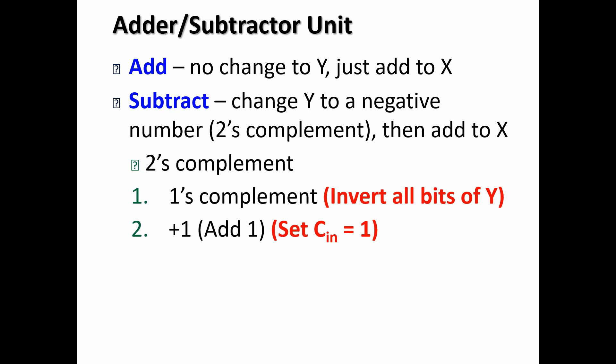When we are going to subtract, we need to change Y into a negative number. And how do we do that? That means we need to do a 2's complement of it. Now, a 2's complement we can obtain by getting the 1's complement and then we add a 1 to it.